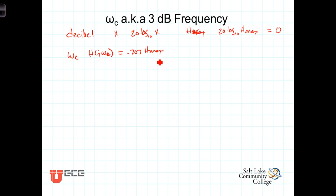So if we were to look at that in dB, it would take then 20 times the log base 10 of 0.707 H max. We have two things multiplied together, so using the product property of logs, that then gives us 20 log base 10 of 0.707 plus 20 log base 10 of H max.